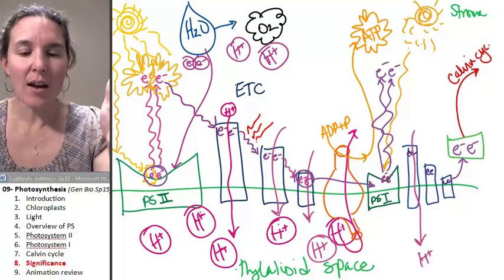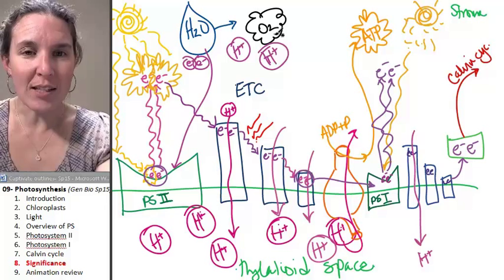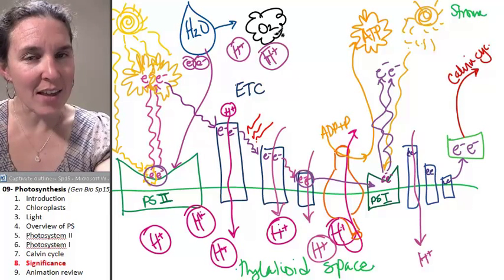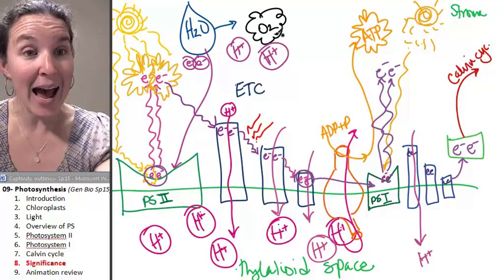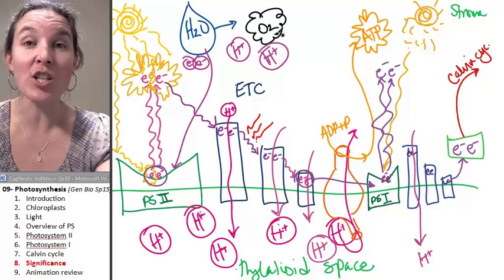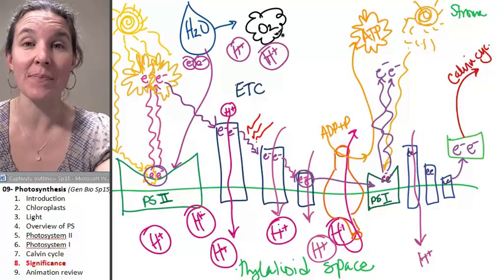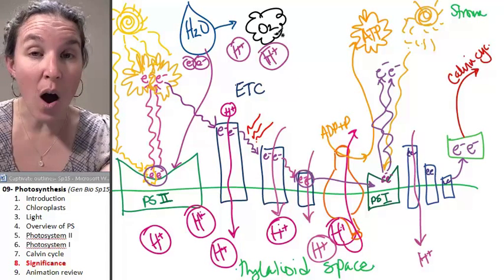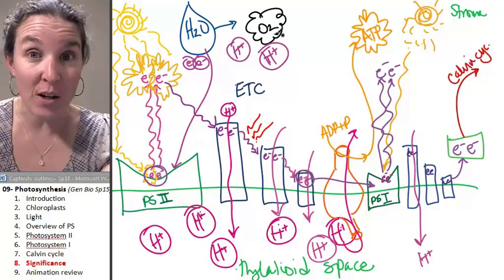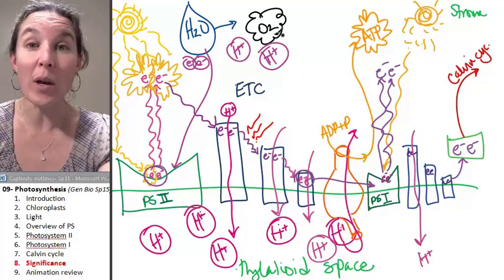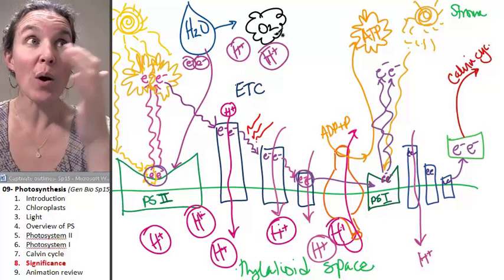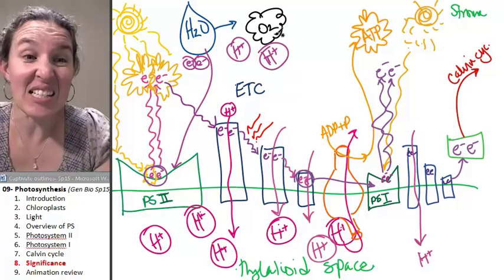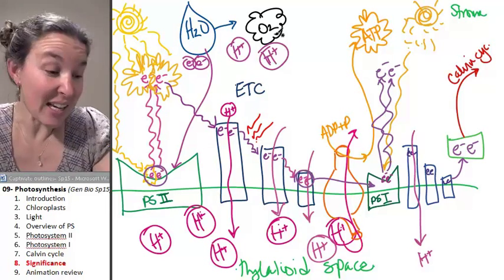Second, photosynthesis is the process that resulted in our oxygenated atmosphere. If it wasn't for photosynthesis, there would be no oxygen in our atmosphere. And without oxygen, we would not exist. So that is game changing in and of itself.